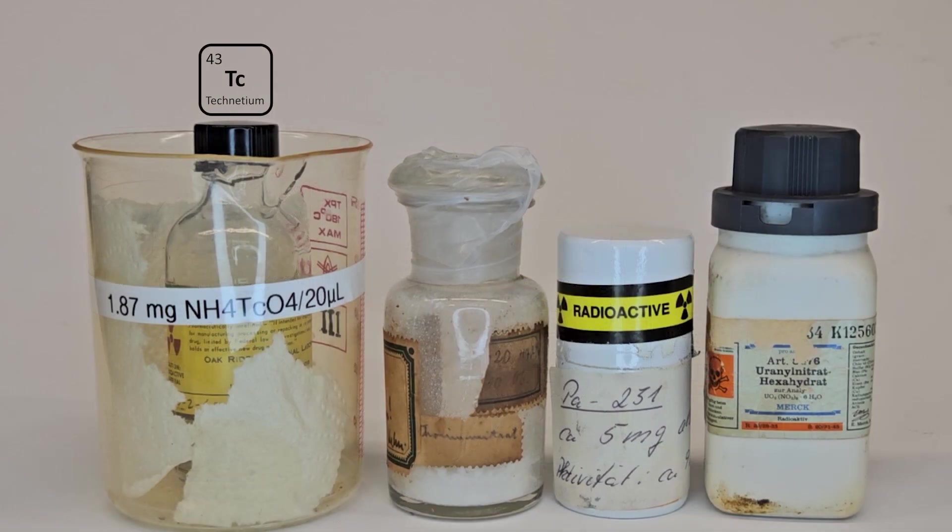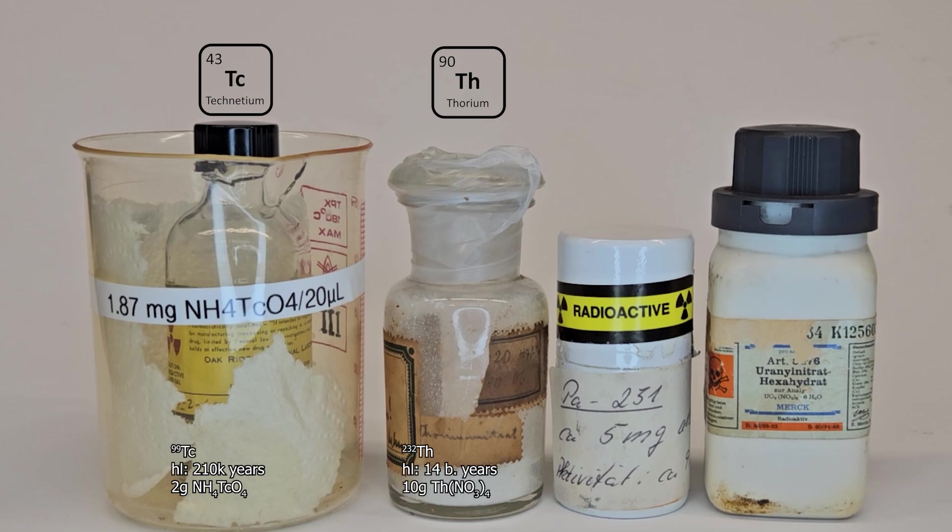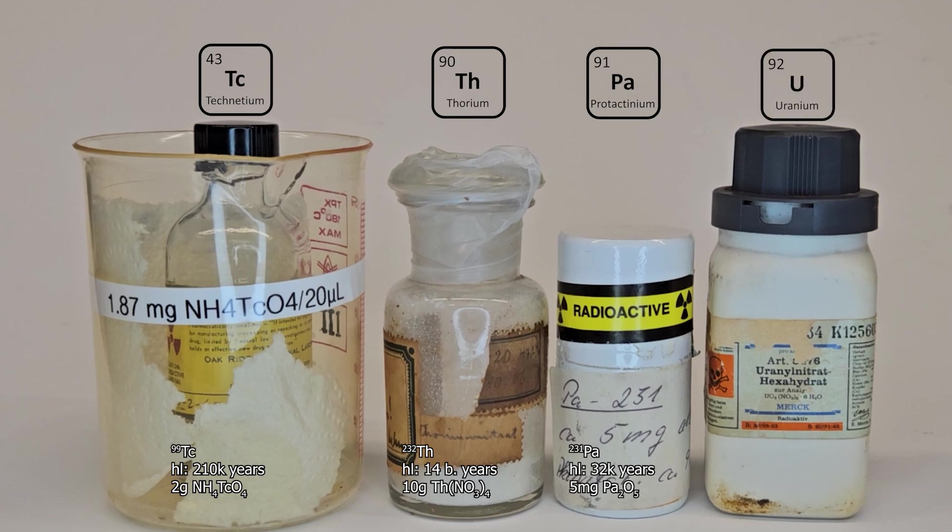Here we have technetium 99 with a half-life of 210,000 years and around 2 grams of ammonium pertechnetate are dissolved in this flask. This is thorium nitrate. Thorium 232 has a half-life of 14 billion years. The amount seems to be around 10 grams or so.